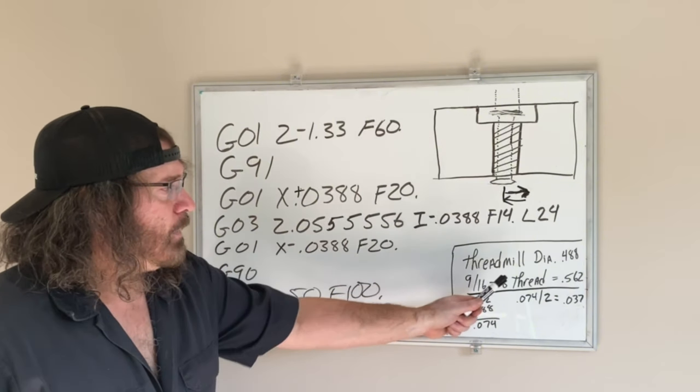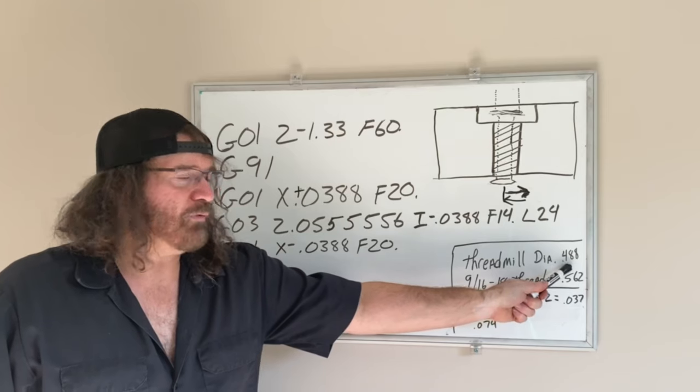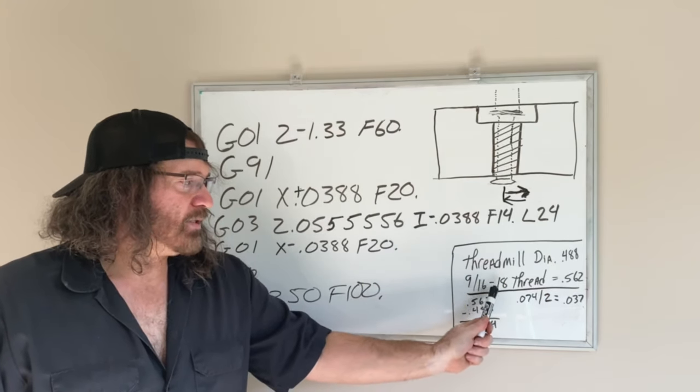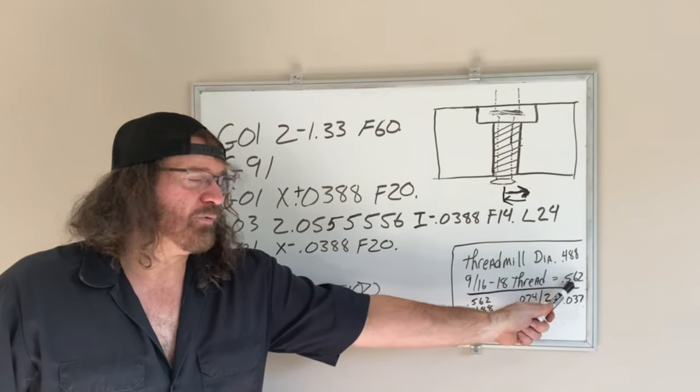My thread mill diameter was 0.488. Doing 9/16-18 thread, 9/16 is 0.562. So you take your 0.562 minus 0.488 and you come up with 0.074.